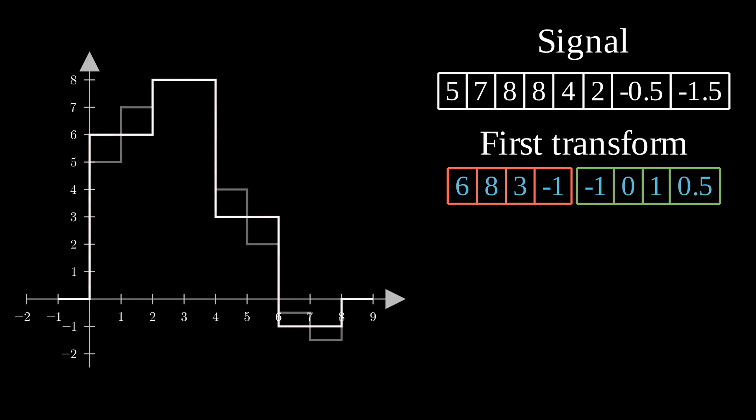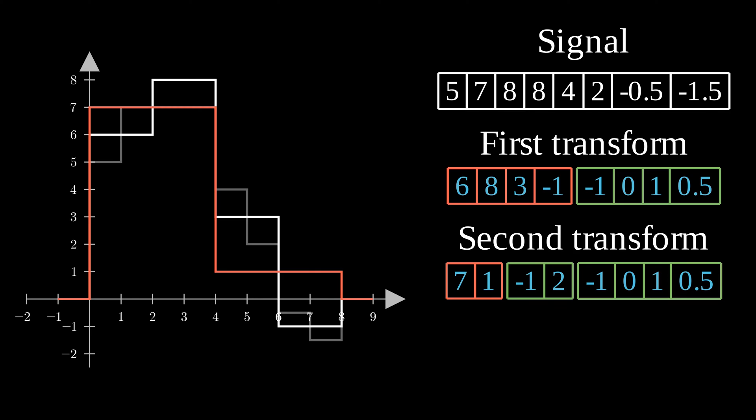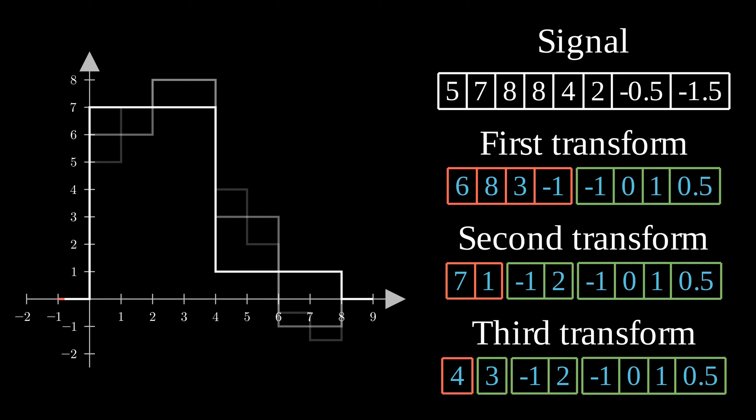We can now compute a second transform. That leaves us with 2 steps for the approximation function. The 2 values in the detail space are the differences between these 2 steps and the 4 steps of the previous approximation function. And finally, we can compute our last transformation.